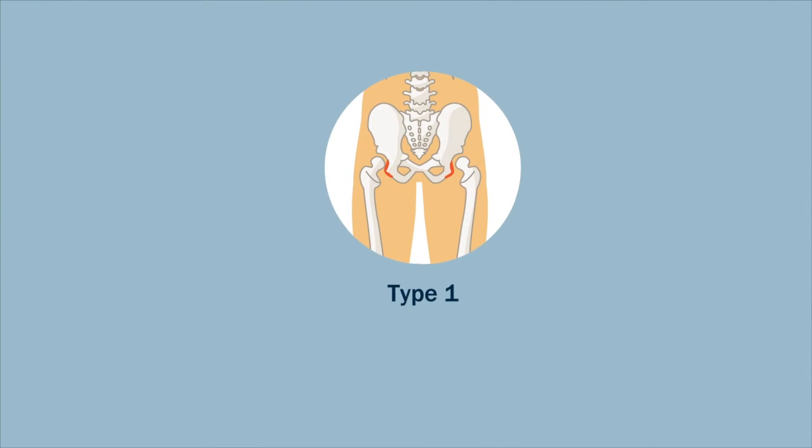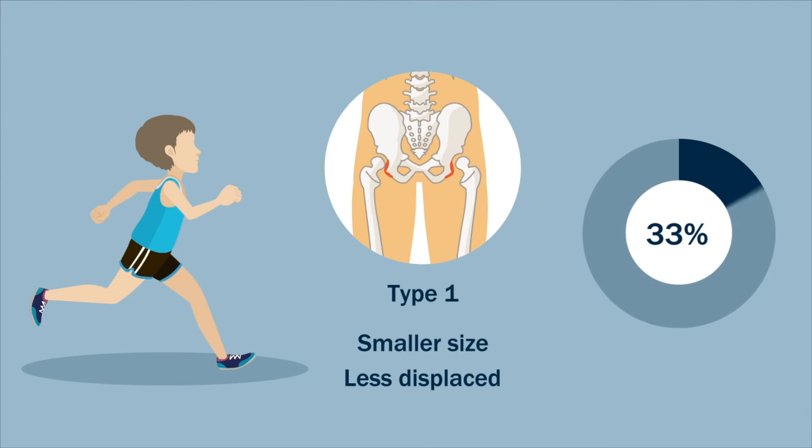Type 1 isolated lateral fractures occurred more commonly in younger patients and were smaller in nature, less displaced, and had a 33% chance of progressing to a nonunion.